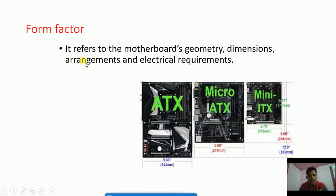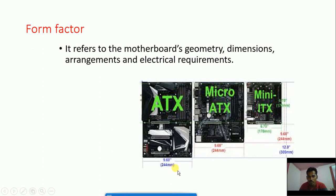The motherboard has three main characteristics: one is Form Factor, two is Chipset, and three is Processor Socket. Form Factor refers to the motherboard's geometry, dimensions, arrangement, and electrical requirements - basically the size and shape of the motherboard. The standard ATX motherboard size is 244mm.